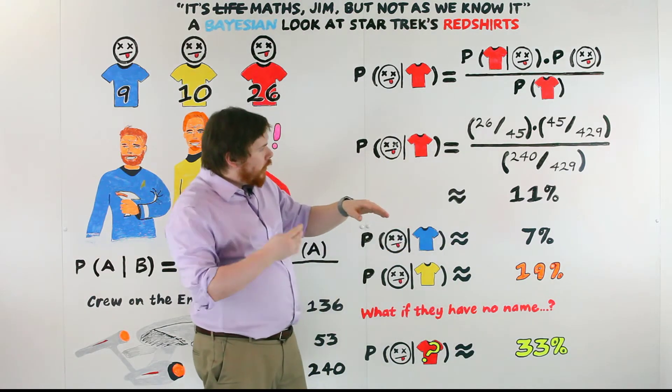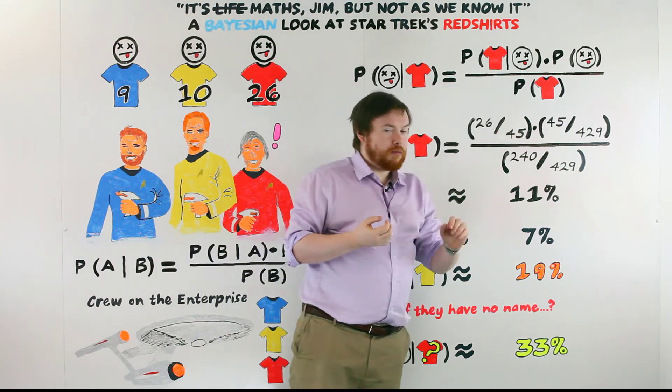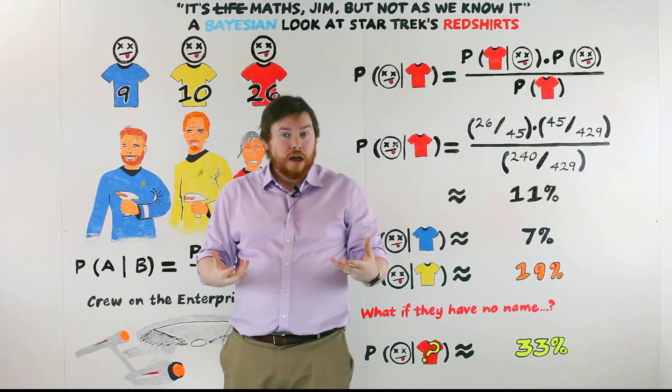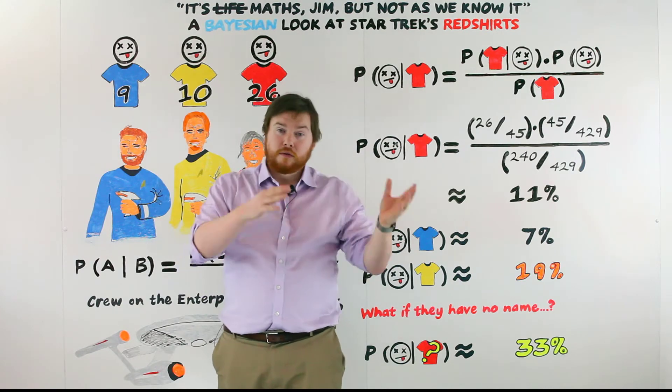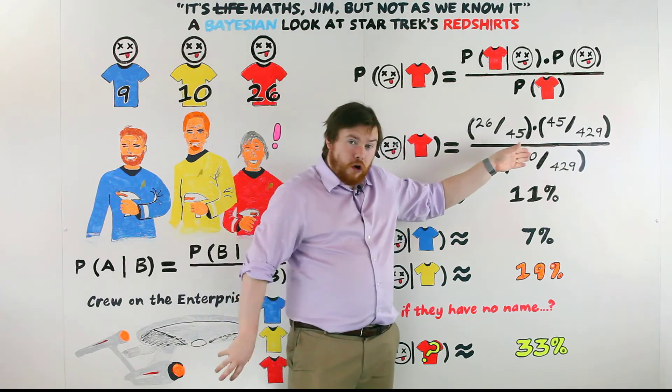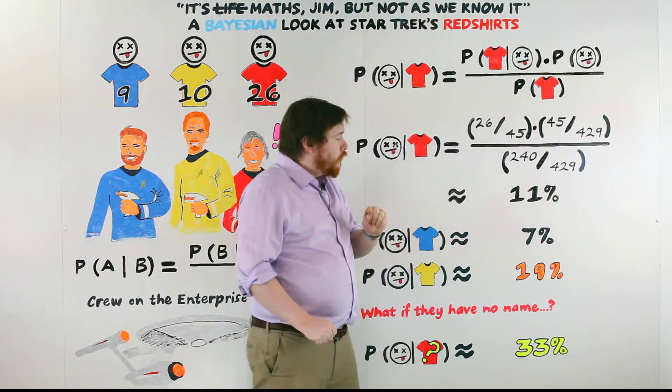And then finally, we've got the marginal probability, which is our probability of wearing a red shirt regardless of whether we live or die during the series. And that would be our 240 red shirts out of the total of 429.